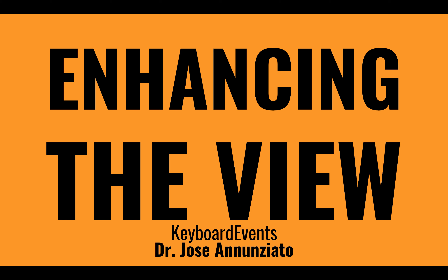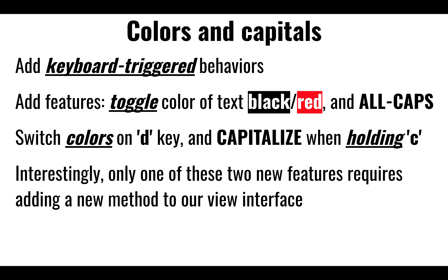Let's now explore a couple of enhancements we could do on the view — listen also to keystrokes as we type. We'll add two features: one is being able to toggle between colors, where the text toggles between black and red, and also being able to capitalize the entire string or put it in lowercase as we type. For instance, if we type the D key, it's going to change the color from black to red. If we hold the C key, it's going to capitalize the text, and when we let it go, it'll change back to lowercase.